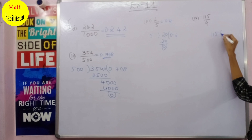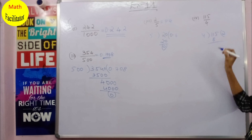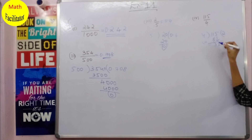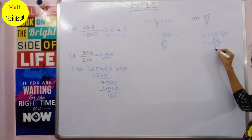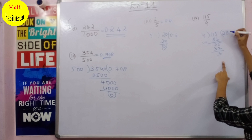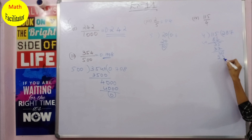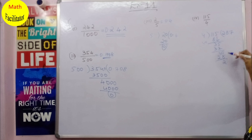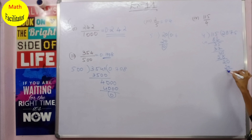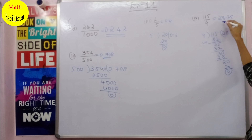Next you have 115 divided by 4. 4 × 2 = 8, subtracting gives remainder 3; bring down 5, so 35. 4 × 8 = 32, remainder 3. Since 3 is not divisible by 4, take a decimal point and write 0: 4 × 7 = 28, remainder 2. Take 0: 4 × 5 = 20, remainder 0. So 115/4 = 28.75, which is a terminating decimal.